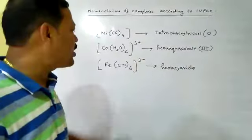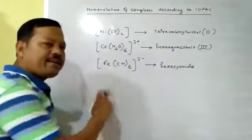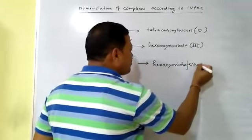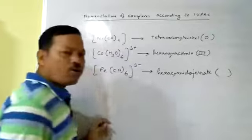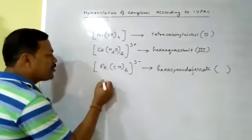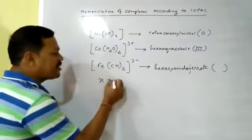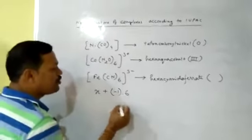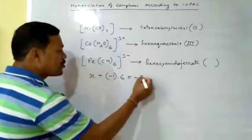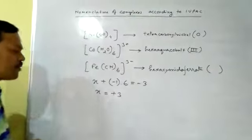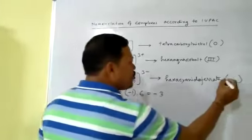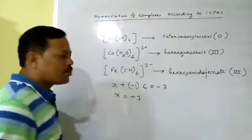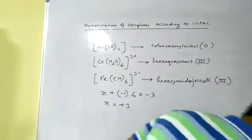The complex contains a negative charge outside the square bracket, so the metal here is iron. Iron is called ferrate. So we write hexacyanidoferrate, then the Roman numeral for the oxidation number. Suppose iron is X: X + (−1 × 6) = −3, so X = +3. Iron is in the +3 state. The full IUPAC name is hexacyanidoferrate(III). Like this, you can write the IUPAC name of anionic complexes.